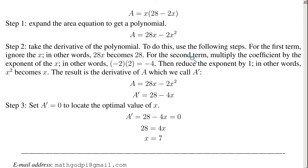For the second term, multiply the coefficient by the exponent of the x. In other words, negative 2, which is the coefficient, times 2, which is the exponent of the x, equals negative 4.